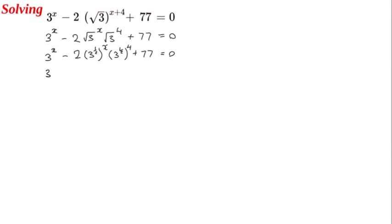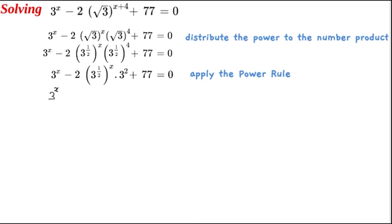Now let's multiply in. We will get 2 by 3 to the power of x over 2, multiplied by 3 to the power of 2, since 4 times one-half is 2, plus 77.